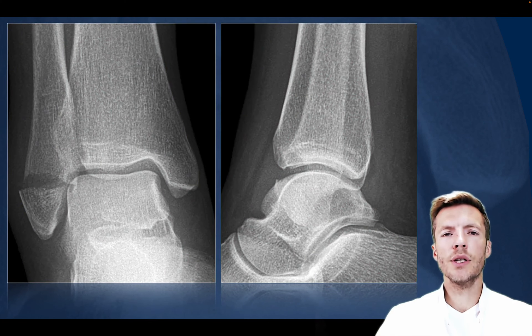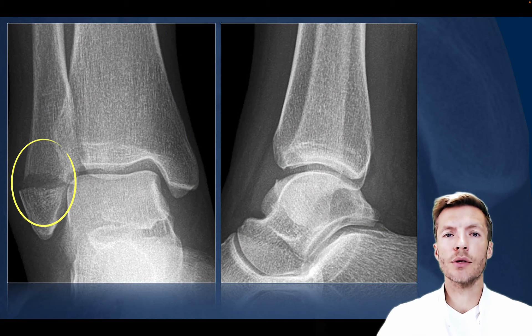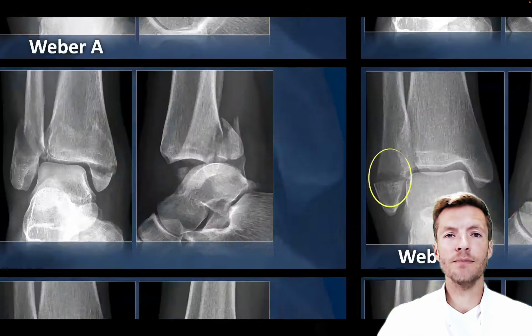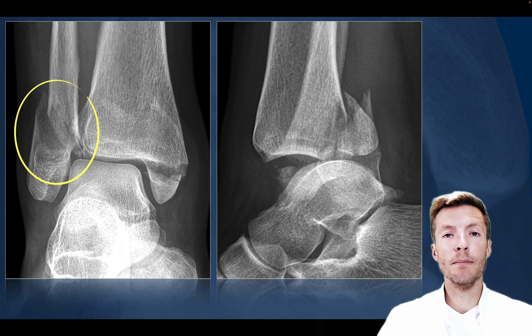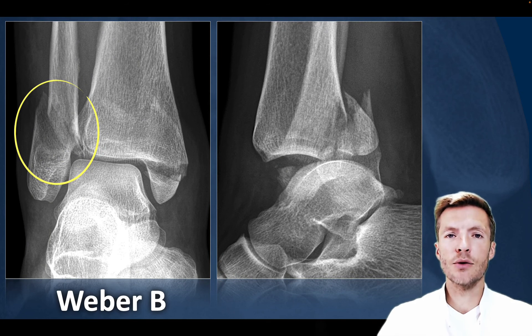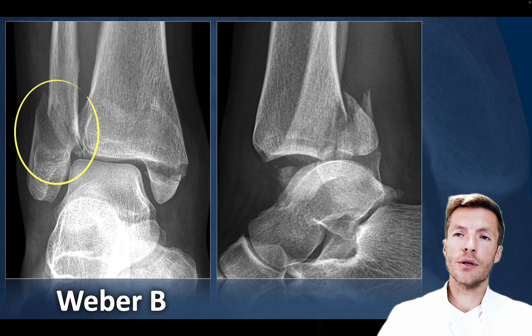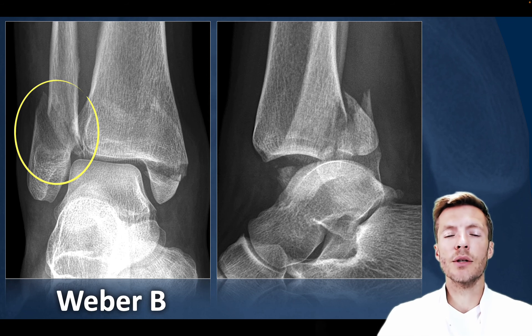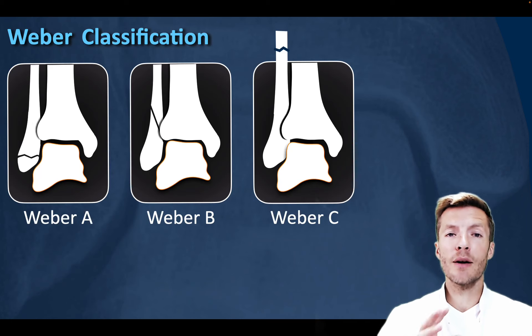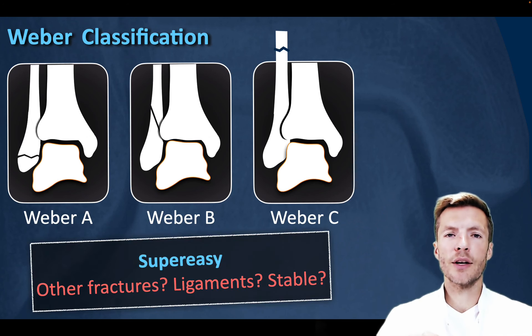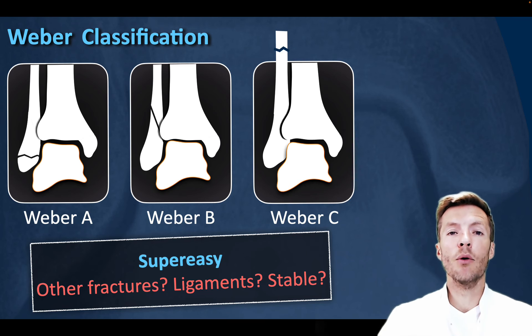Here we see a transverse fracture through the distal fibula below the level of the anterior syndesmosis — this is a Weber A fracture. In this next case we see an obvious oblique fracture through the distal fibula at the level of the syndesmosis — a Weber B fracture. However, this classification does not take into account any associated ligamentous injury or other fractures, such as the medial malleolus fracture or the fracture on the posterior malleolus. The Weber classification is super easy to use, which is why it's so popular, but it does not tell us whether the fracture is stable or not.